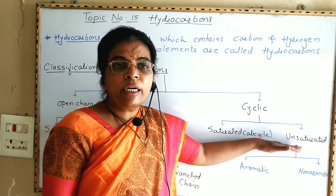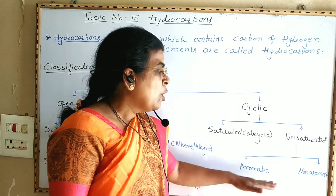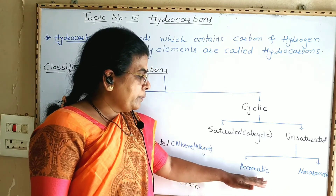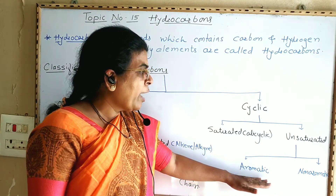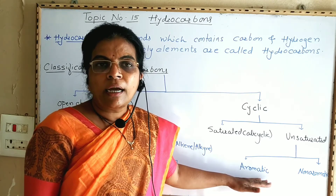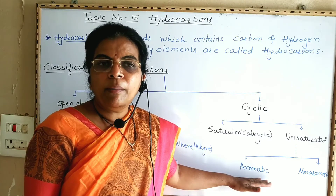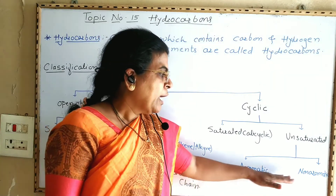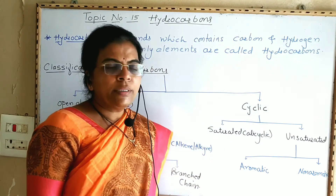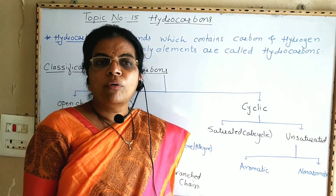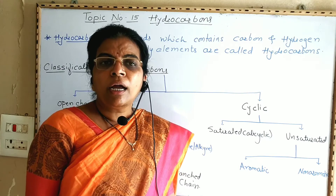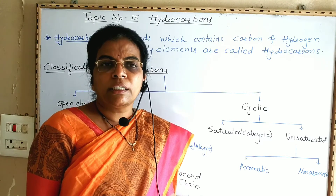Unsaturated cyclic hydrocarbons are further classified into aromatic and non-aromatic. In aromatic hydrocarbons there is presence of alternate carbon-carbon single and double bonds in the ring structure — for example, benzene. In non-aromatic cyclic hydrocarbons there is presence of only one or more carbon-carbon double bonds in the ring structure.